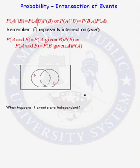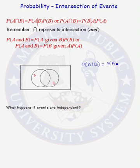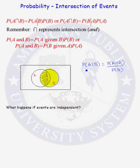Before going any further, I want to look at the Venn diagram to see what the probability of A given B looks like. If I rearrange this equation, I find that the probability of A given B equals the probability of A intersect B divided by the probability of B. A intersect B is the shaded overlapping region, and the probability of B is the yellow highlighted region. So P(A|B) is the intersection divided by the probability of event B.